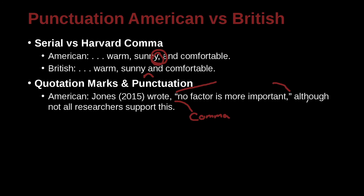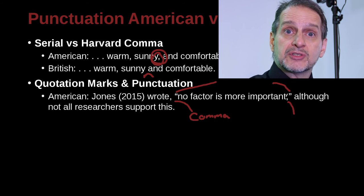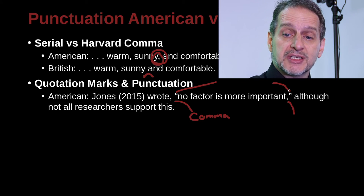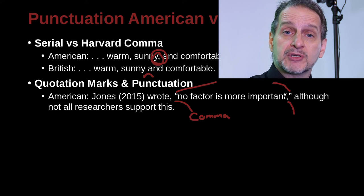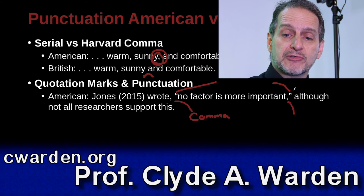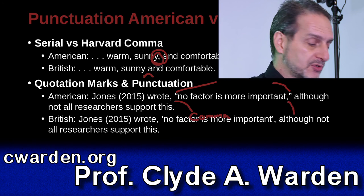A key point here is that the comma at the end of the quote is included on the inside of the quotation mark. Inside the quotation, there is no space before the comma, and there is no space after the comma because it sits right up against the quotation mark. There is one space after the closing quotation mark, just before the word 'although.' We'll be looking at more examples as we move on.